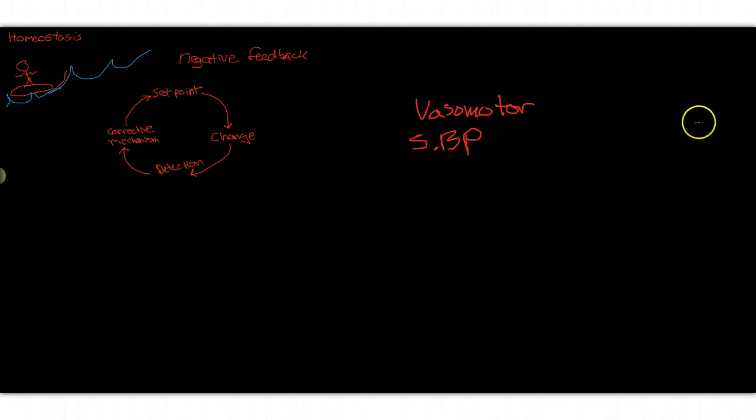There is a set point for the systolic blood pressure in this example of say 110 to 120 millimeters of mercury, and that is set in the vasomotor center. Now what happens is something changes in the system.